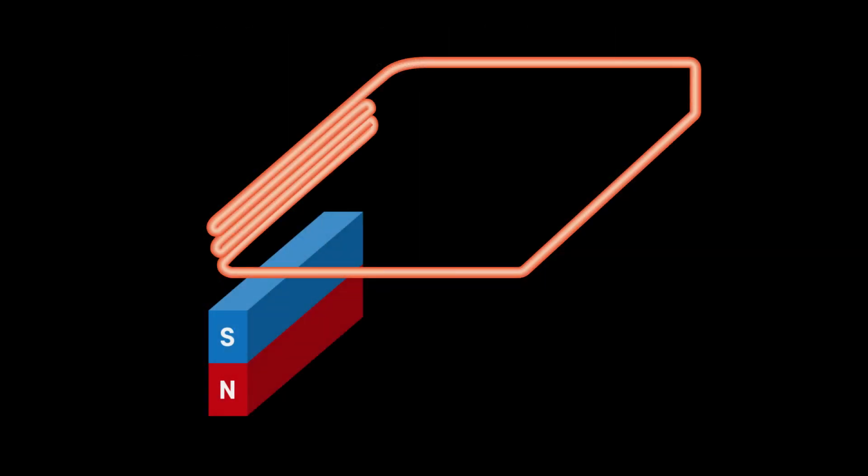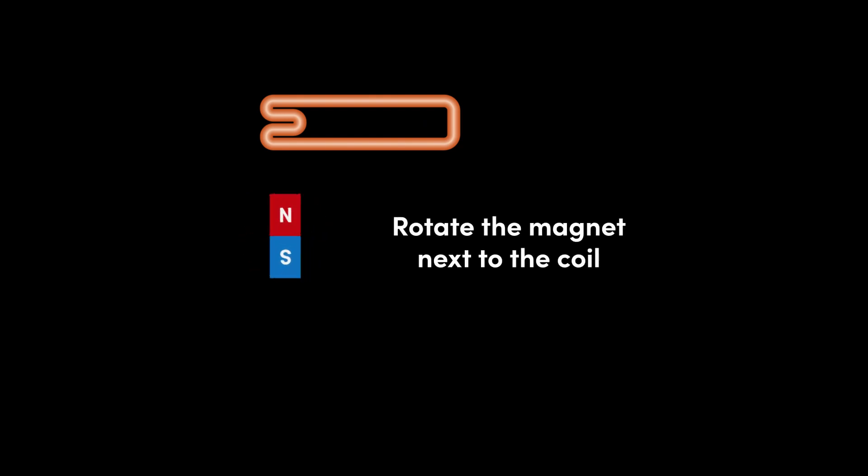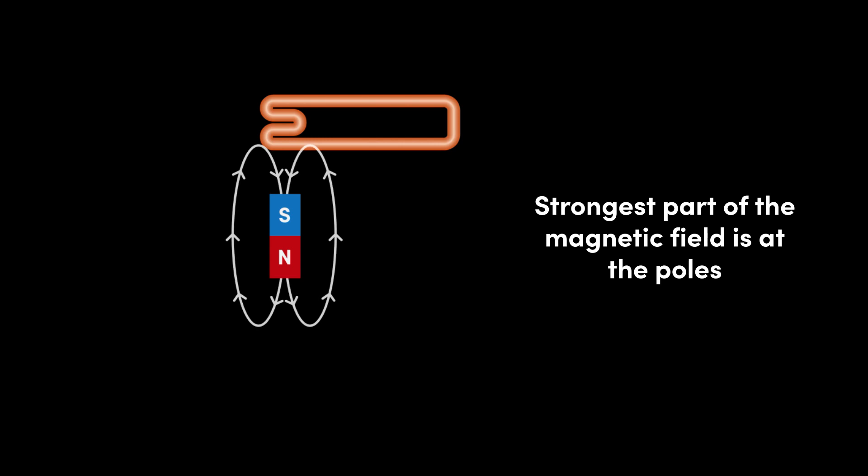However, rather than move the magnet back and forth in and out of the coil, which is a bit tedious, it's easier to rotate the magnet next to the coil. The strongest part of the magnetic field is at the poles, where the magnetic field lines converge and are most dense. The weakest part of the magnetic field is next to the center of the magnet, where the magnetic field lines are least dense.